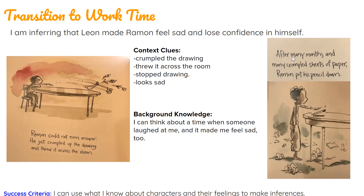Over here it says, after many months and many crumpled sheets of paper, Ramon put his pencil down. So I can infer that Leon made him feel sad and lose confidence because in my context clues, it shows me he crumpled up the drawing and threw it across the room. He stopped drawing and he looks sad. And then I can connect that to my background knowledge — I can think of a time when someone laughed at me and it made me feel sad too. So putting all of that information together, my context clues and my background knowledge, I can understand that Ramon is feeling sad and not very confident.